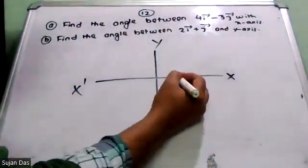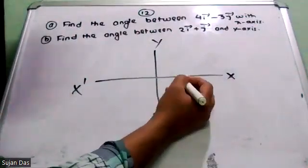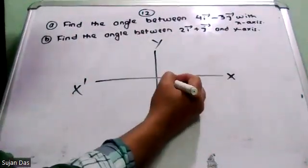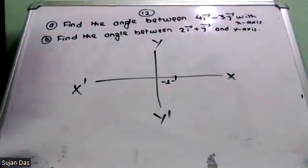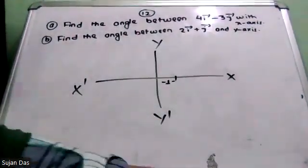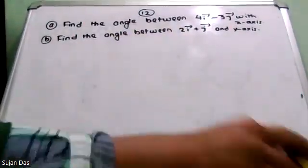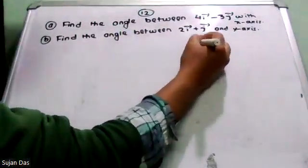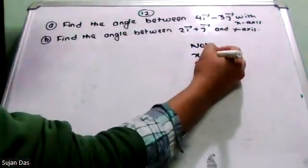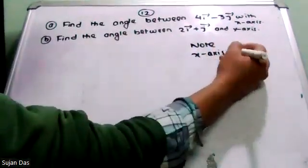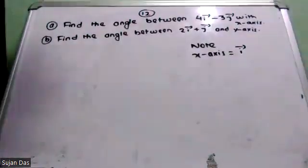So, along the unit vector, the y-component is 0. For the x-axis, the unit vector's x-component is 1. So, always remember: for the x-axis, the unit vector is the i-vector only — the i-component only.